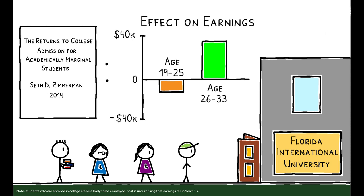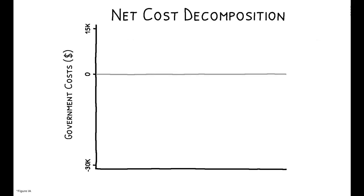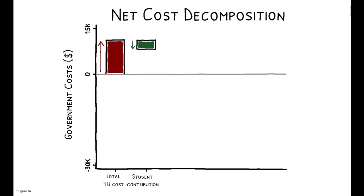Using these and other estimates from the Zimmerman paper, the authors decompose the net cost of admitting an additional student to FIU. First, they tally the upfront cost. After accounting for various factors, this amounts to $2,600 per admitted student.